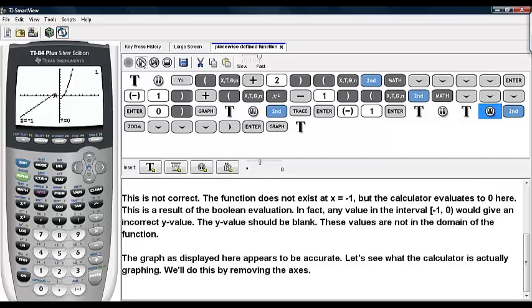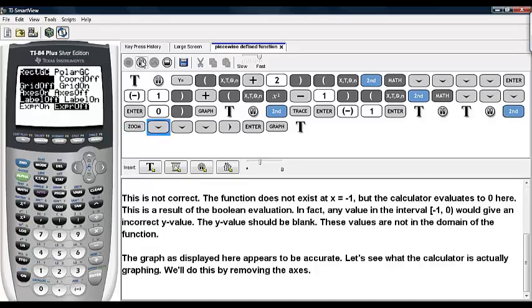The graph as displayed here appears to be accurate. Let's see what the calculator is actually graphing. We'll do this by removing the axes. So we hit second and zoom, scroll down to where it says axes on and we highlight axes off and hit enter. Then we hit graph again.